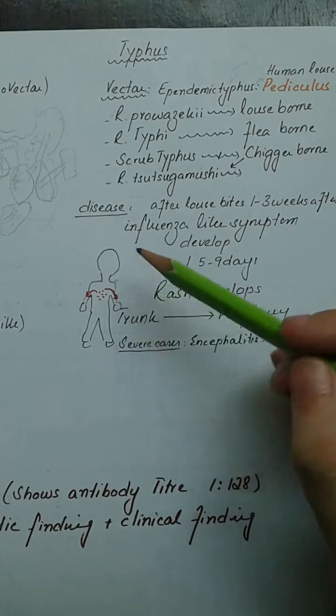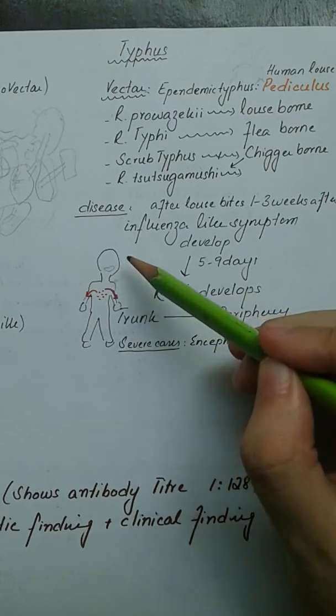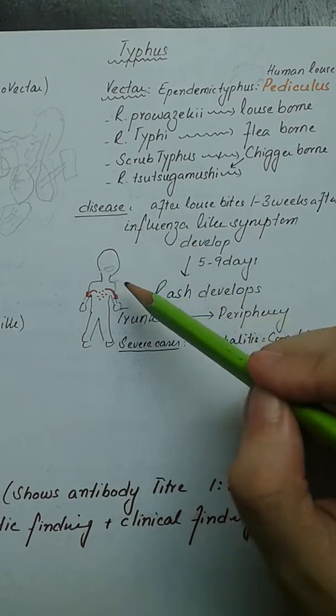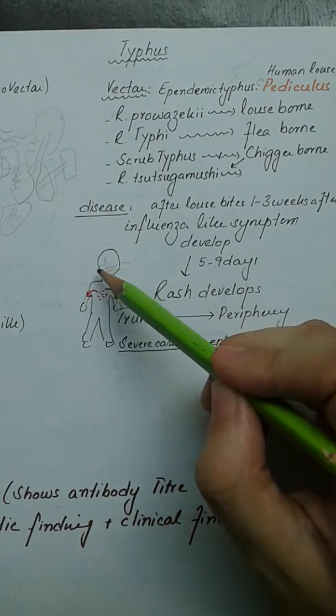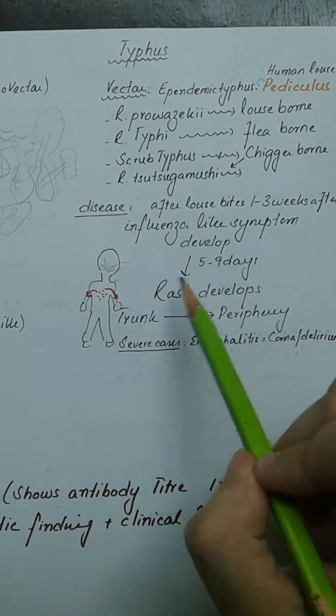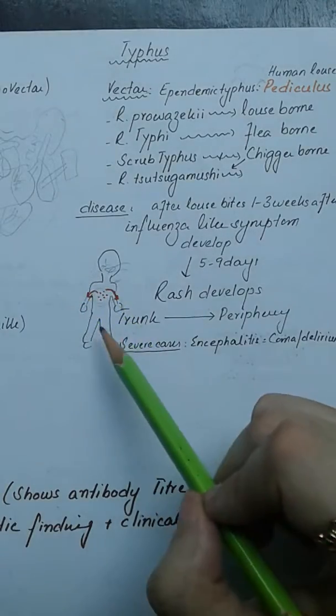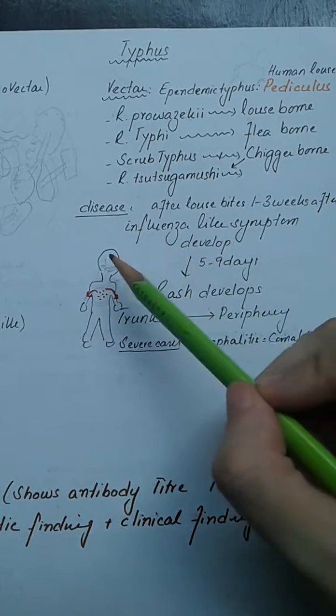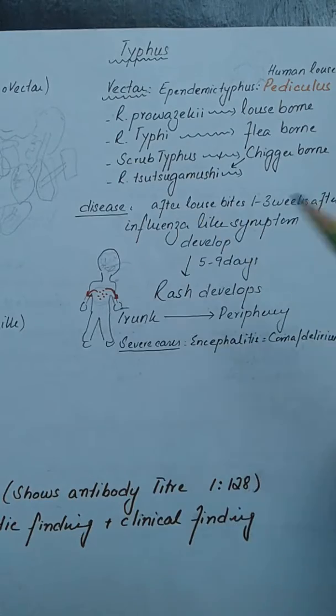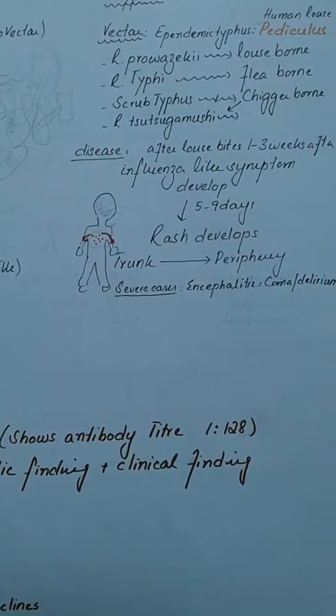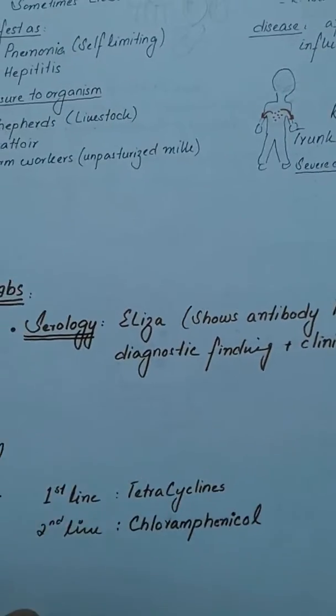After influenza, in five to nine days, a rash appears which is central and goes to the periphery. The patient can also develop certain complications such as encephalitis that could progress to delirium and even coma.